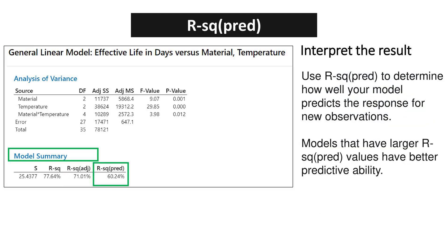Use R-squared predicted to determine how well your model predicts the response for new observations. Models that have larger R-squared predicted values have better predictive ability.